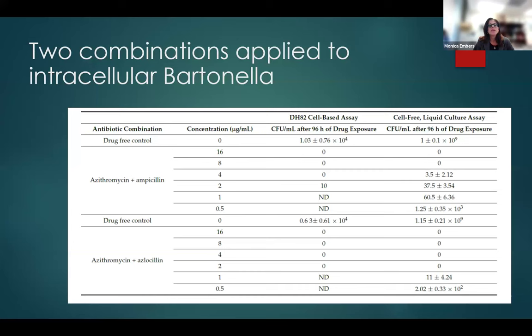When we used the DH82-based cell assay again but combined two different antibiotics — azithromycin and ampicillin, or azithromycin and azlocillin — the results changed dramatically. Looking at CFU per mL, where zero means complete killing, these antibiotic combinations at low doses were quite effective at killing the bacteria inside the cells.